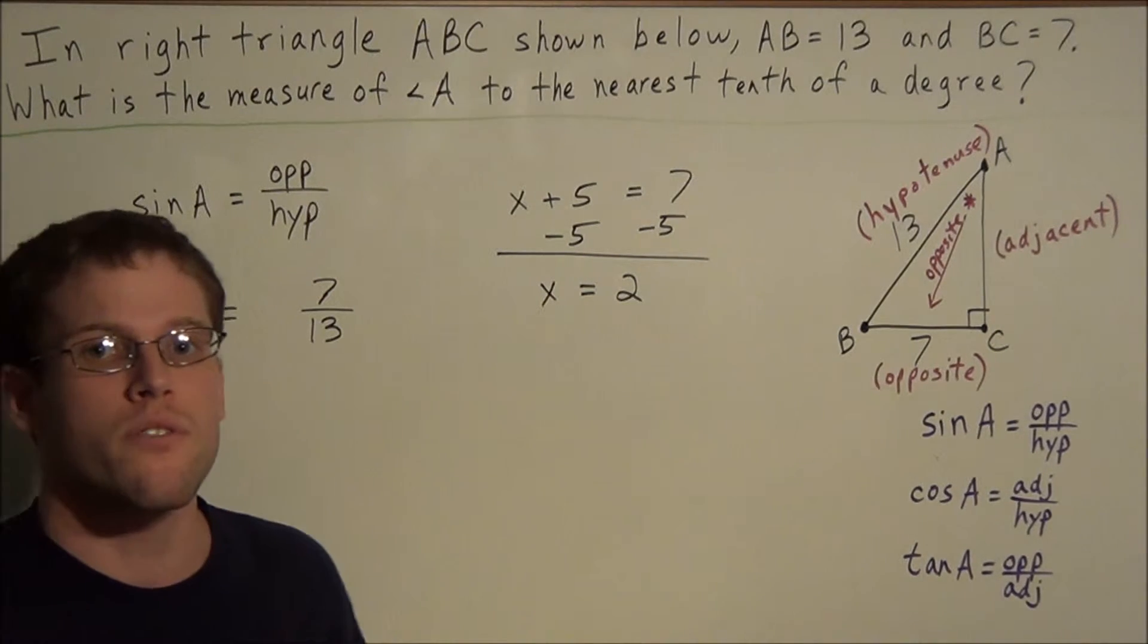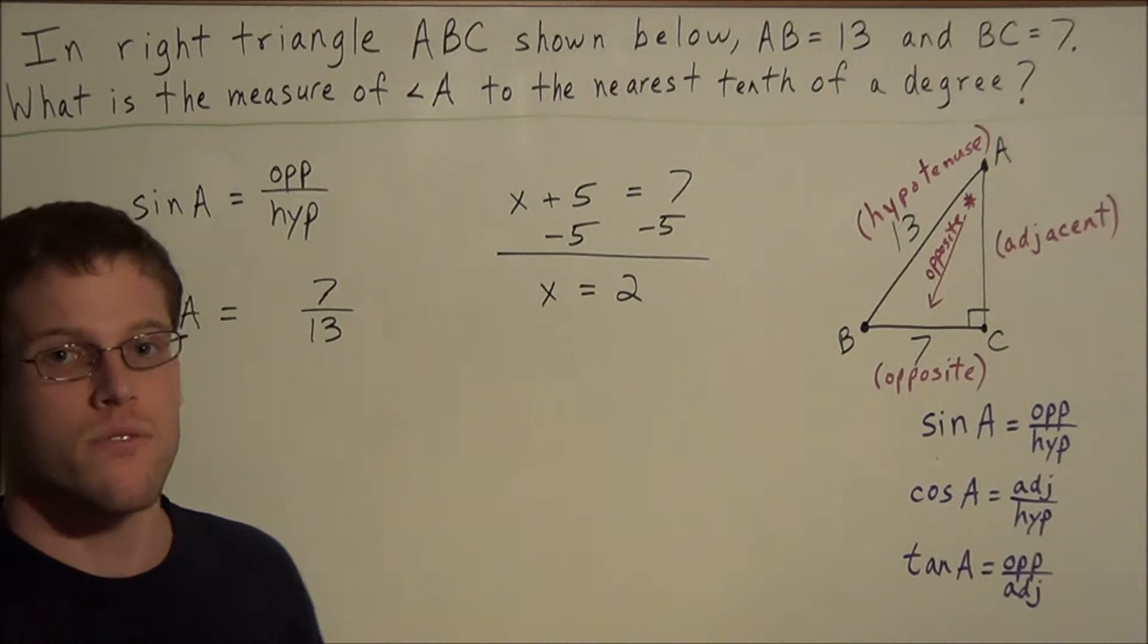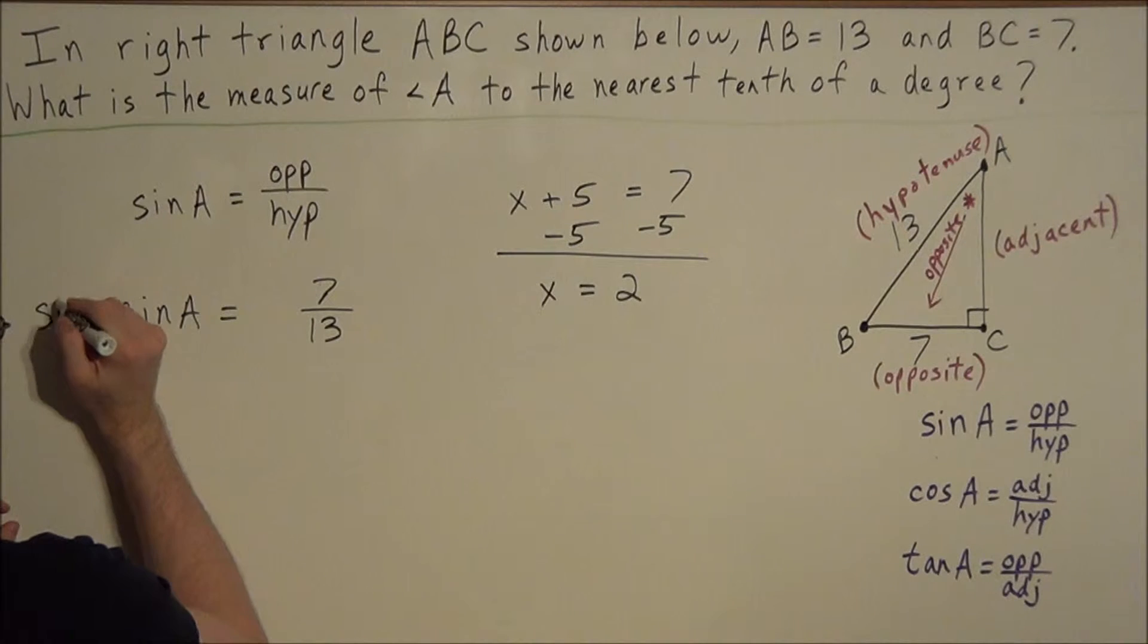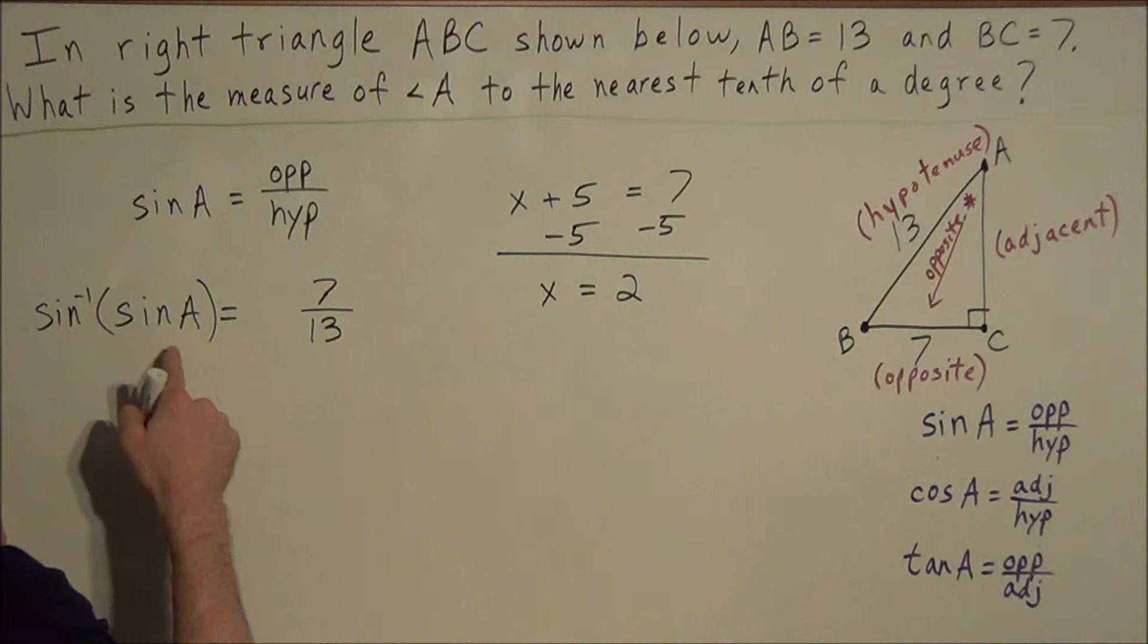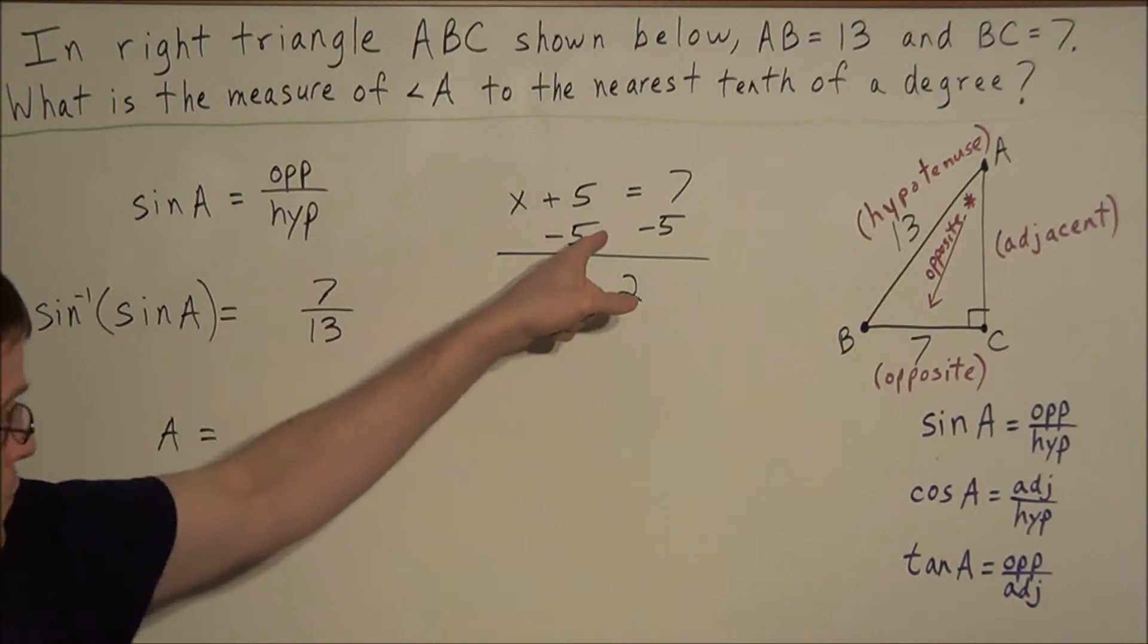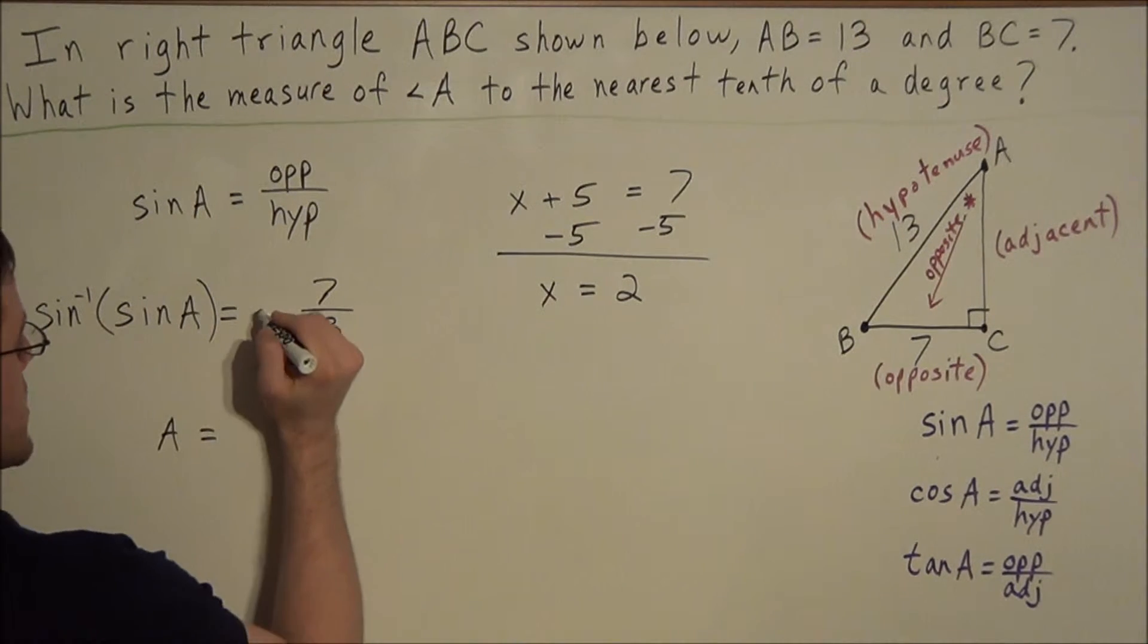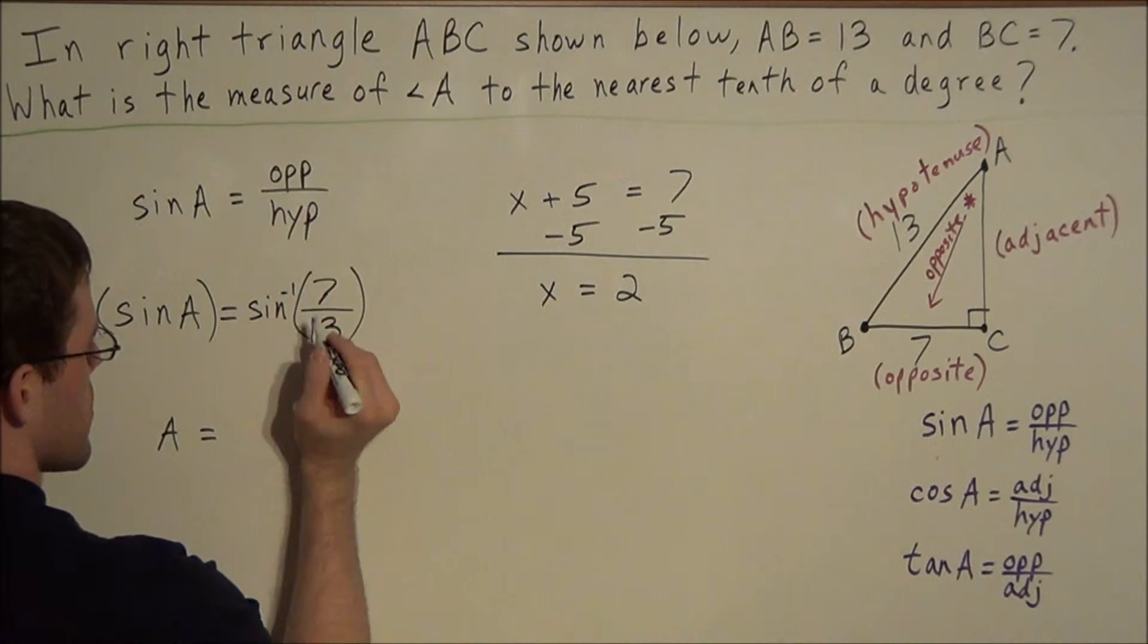But for this problem here, we notice, what is the opposite operation of taking the sine of some value? Well, the opposite of taking the sine of some value would be to take the sine inverse of some value. So if we take the sine inverse of sine A, it's going to give us A. But now, before when we subtracted 5 from both sides, we have to do the same thing to both sides of this equation. So if we took the sine inverse of the left-hand side, we're going to take the sine inverse of the right-hand side as well.